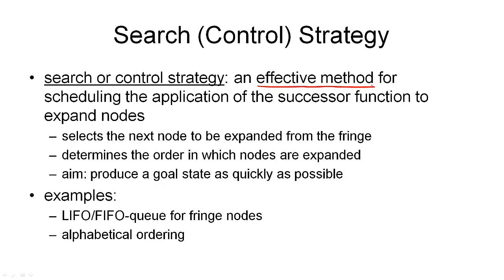A strategy can be implemented by keeping fringe nodes in a specific data structure. A queue can be either last-in first-out (LIFO) or first-in first-out (FIFO), resulting in different search algorithms. A LIFO queue is effectively a stack, meaning we always explore the node last added — this is depth-first search, going deeper before examining neighbors. A FIFO queue gives breadth-first search, exploring one level of the tree before going to the next.